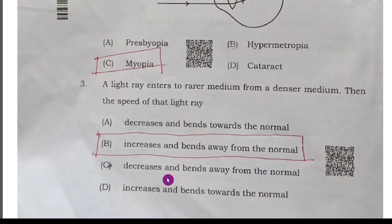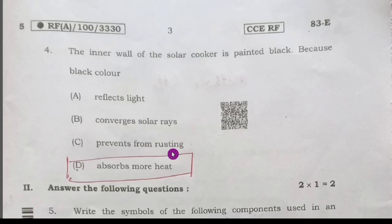Many students are discussing option A and option C, but option B is the right answer. You can check with your textbook. In the textbook, in the box they have given, it increases and bends away from the normal. Option B only correct answer.